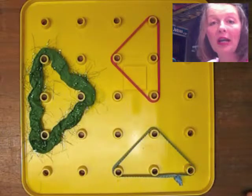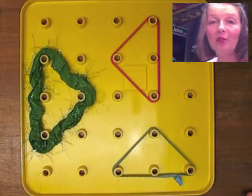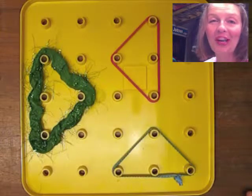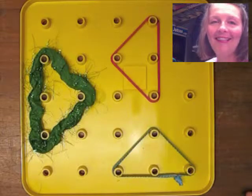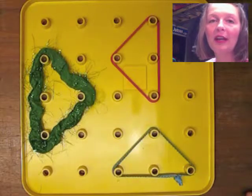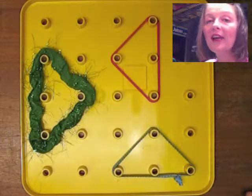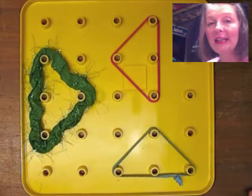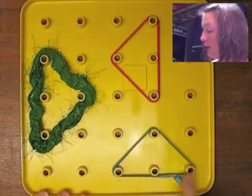For congruent triangles you can either remember from geometry or you're a geometry teacher or you are now learning that two triangles are congruent if all three sides are equal. So you can see here that we have one triangle